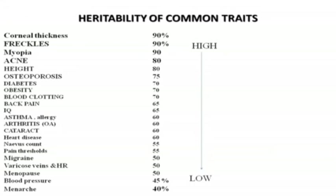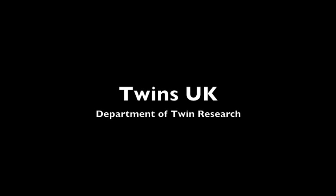Sadly for our research, there aren't many twins reared apart anymore. They used to do this as part of social planning — if there was a poor mother up for adoption, they used to split the kids. They don't do that anymore. But we do have three pairs of separated twins in our data set. They are very interesting, but as I said, just like the rest of you really.